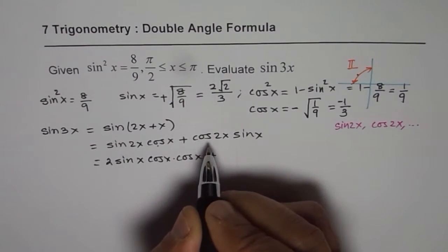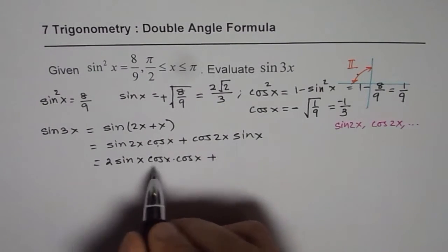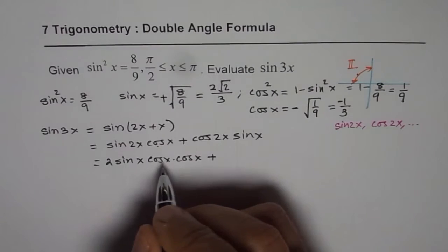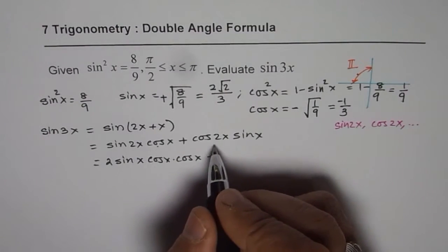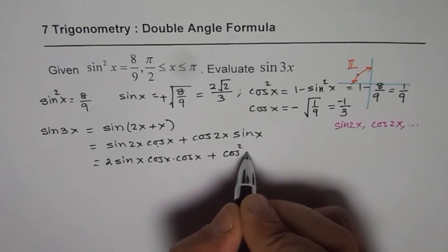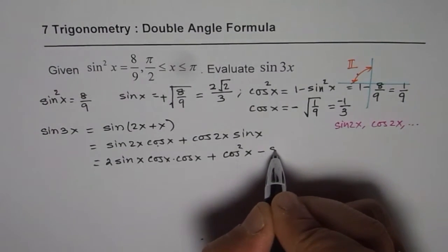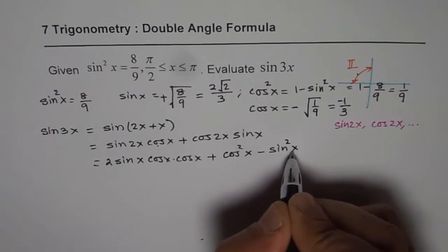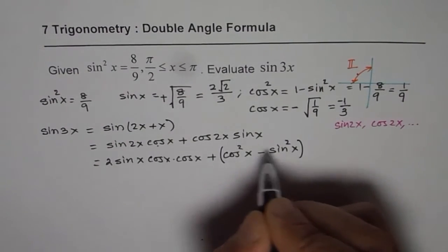we can write as, we already have cos²x here, so cos 2x we could write as cos²x - sin²x. So that gets multiplied by sin x.